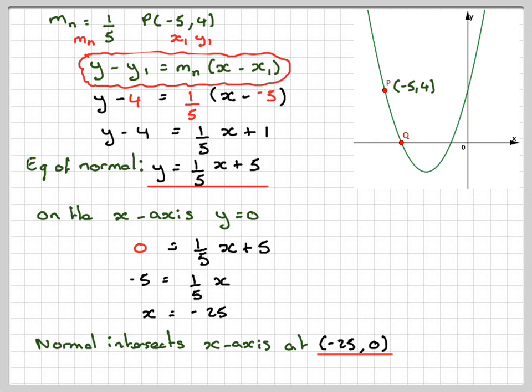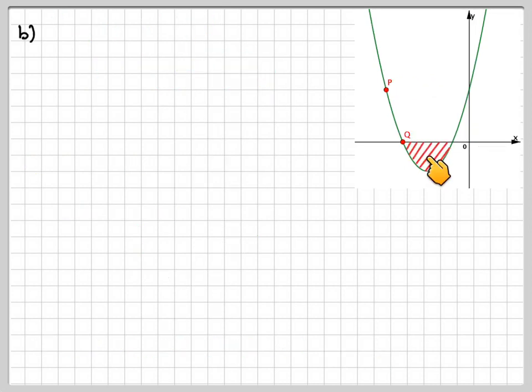That's part A. Now, part B, we have to find this area here. It says the area of the curve enclosed by the curve and the x-axis. The problem is we don't know the coordinate at this point. We also need to know the coordinate of this point here in order to set up our integration.